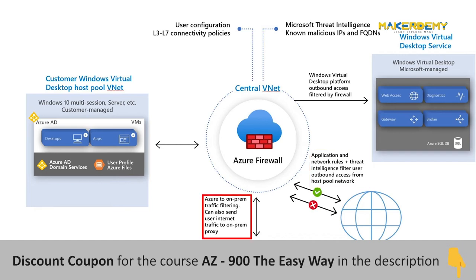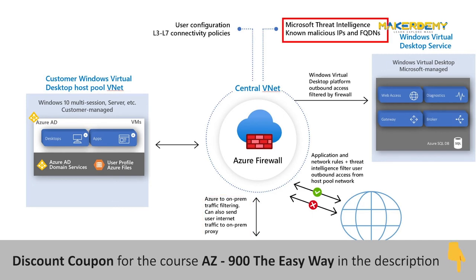It provides a static public IP address for your virtual network resources that can allow external firewalls to recognize traffic originating from your virtual network or other on-premise networks. It also offers threat intelligence features which can block traffic based on suspicious IP addresses or domain names.